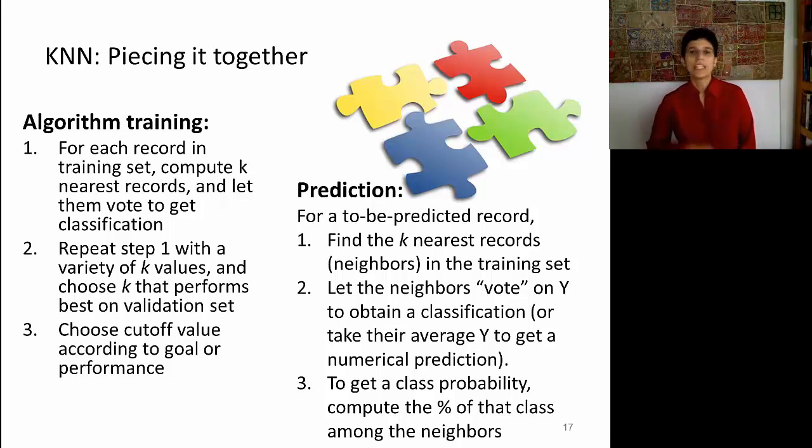Now let's move into the classification phase. In the classification phase, we have a set of new records that we want to classify. For each one of these records, we're going to have to find the K-nearest records in the training data, and let those neighbors vote to get a classification. We can do the exact same thing if we have a numerical Y. The only difference is that instead of a vote, we'll aggregate the neighbor's results, Y results, for instance by taking an average, or taking a median. And finally, in the classification case, if I want to get a class probability, I'll have to compute the percentage of votes of the class of interest among the neighbors. So this is K-NN, and it's easy to explain, but it's going to require quite a lot of data.